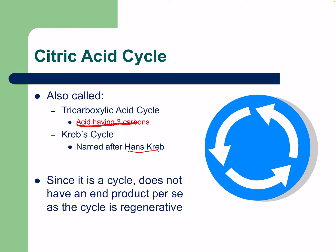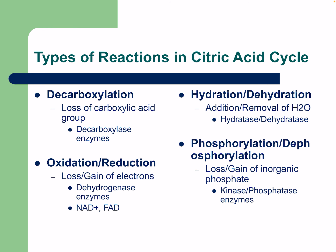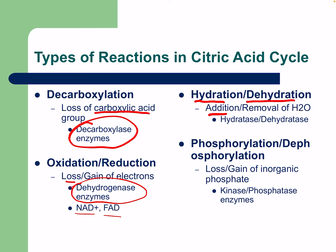The TCA name is due to the acids having three carboxylic groups. Since it is a cycle, it does not have an end product per se — it is regenerative, going in a circle. Types of reactions in the citrate cycle include: decarboxylation (loss of a carboxylic acid through decarboxylase enzymes); oxidation-reduction reactions (loss or gain of electrons via dehydrogenase enzymes, producing NADH and FADH2); and hydration/dehydration reactions (addition or removal of H2O through hydratase or dehydratase enzymes).